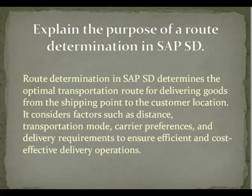Explain the purpose of route determination in SAP S.D. Answer: Route determination in SAP S.D. determines the optimal transportation route for delivering goods from the shipping point to the customer location. It considers factors such as distance, transportation mode, carrier preference, and delivery requirements to ensure efficient and cost-effective delivery operations.